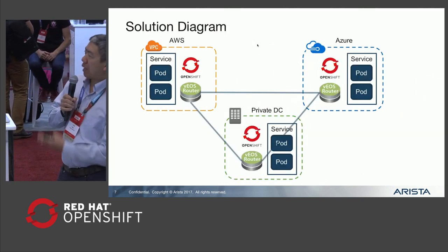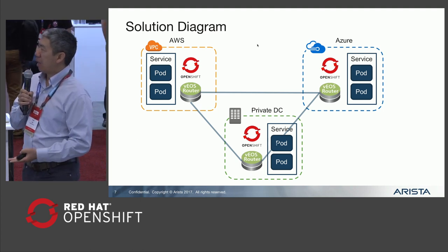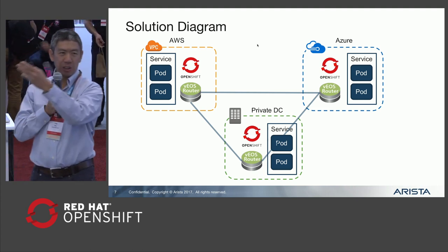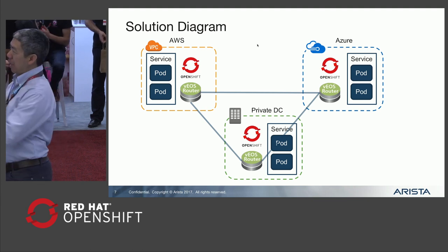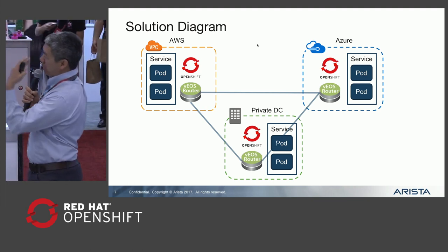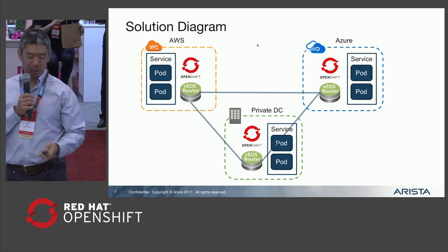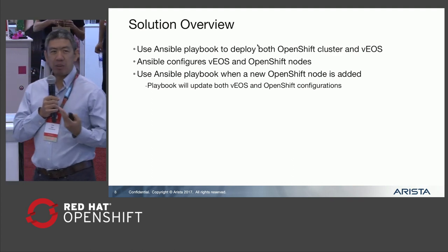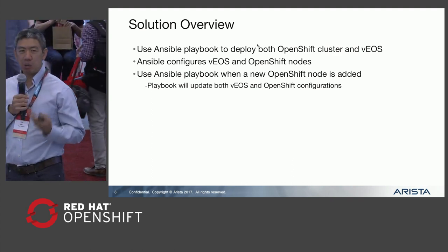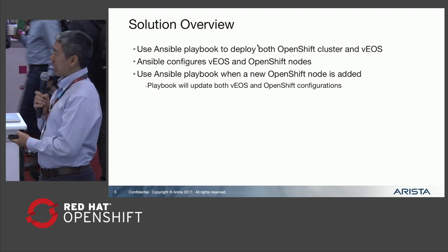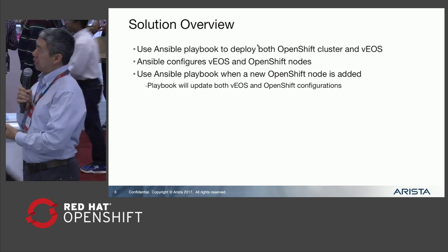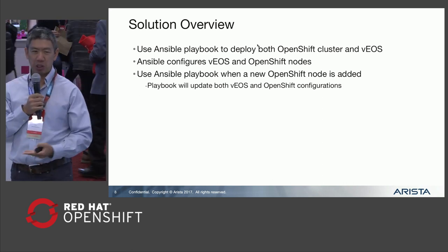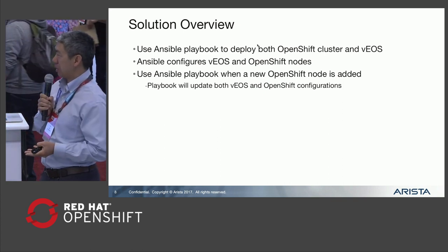Here's a high-level diagram of what we're putting together. We have two different clouds — AWS and Azure — and a private data center, with vEOS routers stitching together these clusters in disparate systems. So a cluster running in Amazon, a cluster running in Microsoft Azure, and a private cluster are all stitched together. The first phase leverages Ansible playbooks to automate and deploy the clusters as well as deploy the routing policies to interconnect them, allowing these clusters to interoperate.